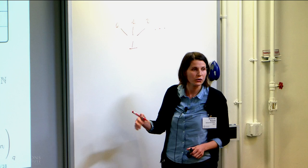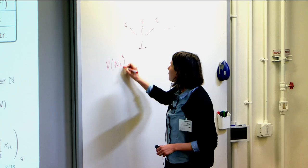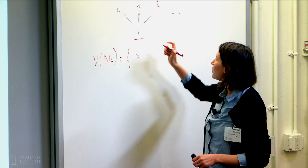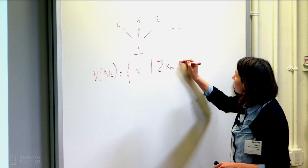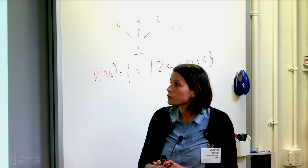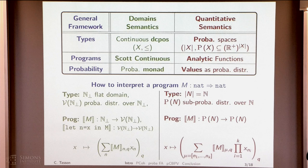If you want to encode probabilities on that, you will use the probabilistic monad that will generate all probabilistic distributions over the domain. For instance, here you will have V of nBOT, which associates to each element a coefficient, such that the sum is equal to 1. To interpret programs, we use Scott continuous functions. That means the more information we have on the input, the more information we have on the output.